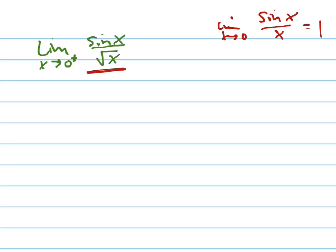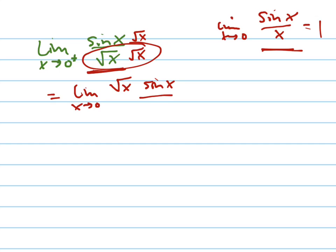So how can I turn this into this? By multiplying by the square root of x on the top and bottom. Because that will give me the limit as x goes to 0 of square root of x sine x over x.